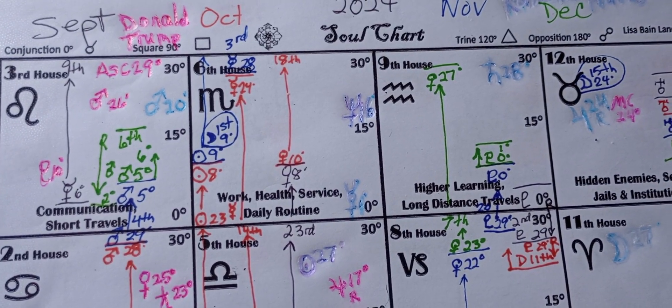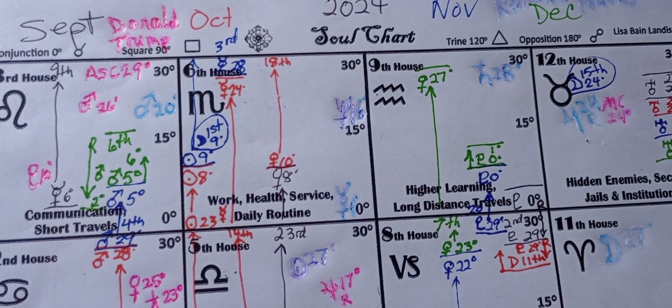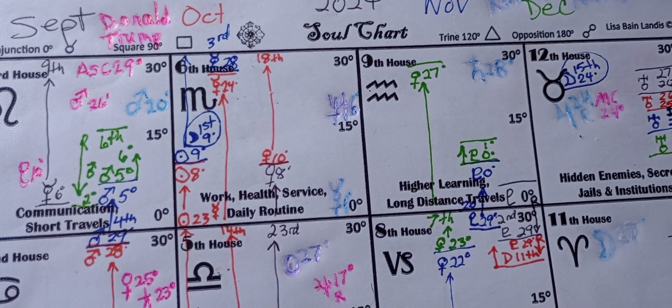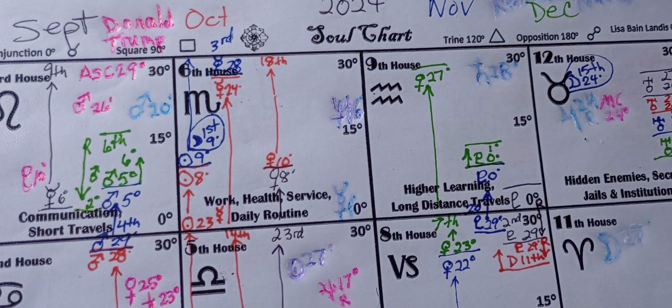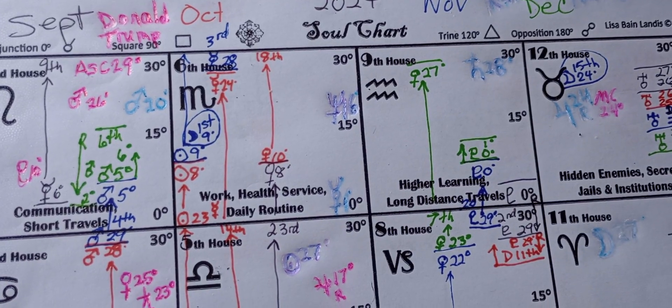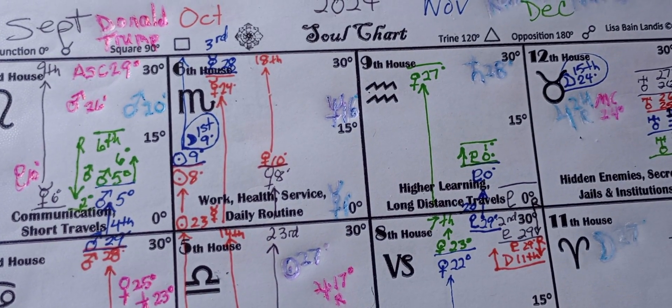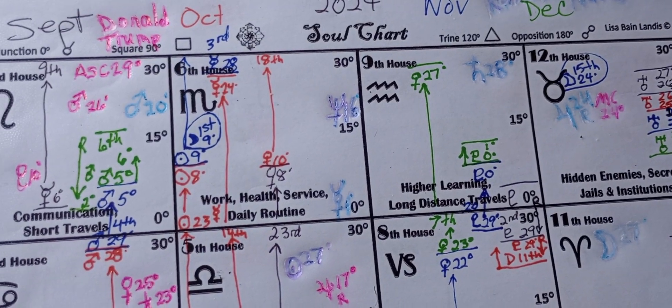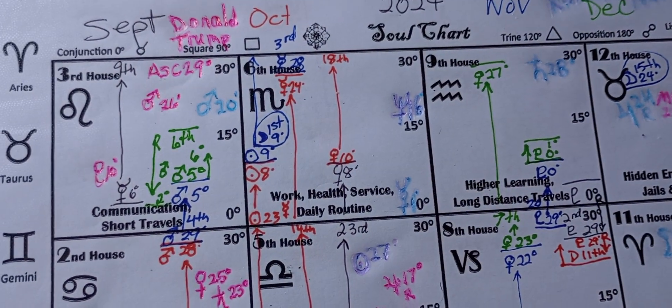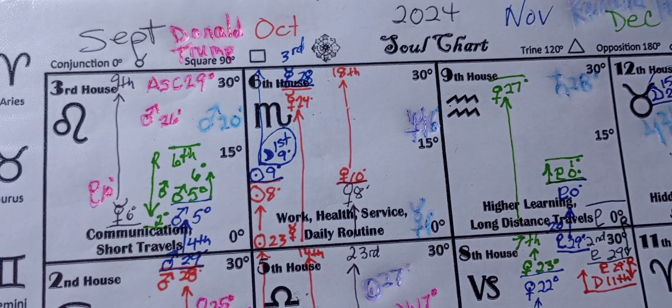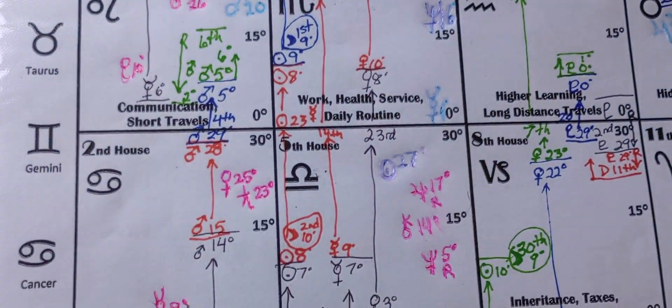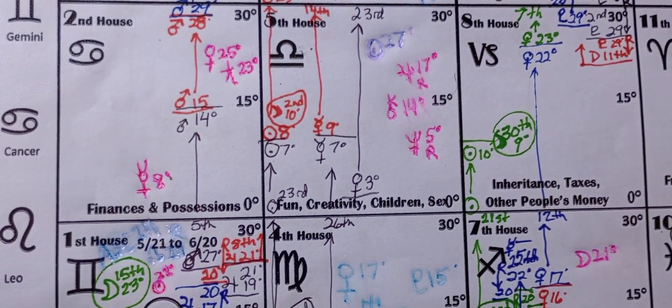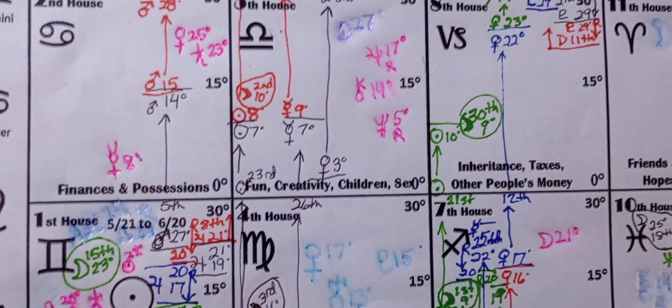This one from September to December, and we have Donald Trump and Kamala Harris. So Donald, as you see, he has more of a pink color in this chart.